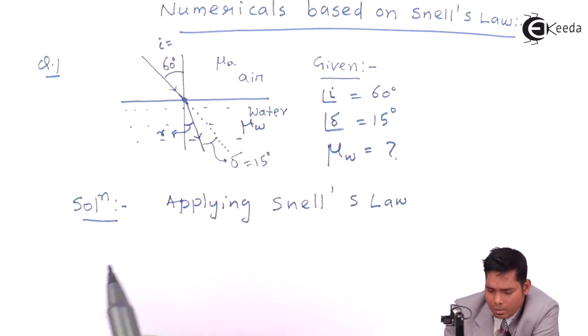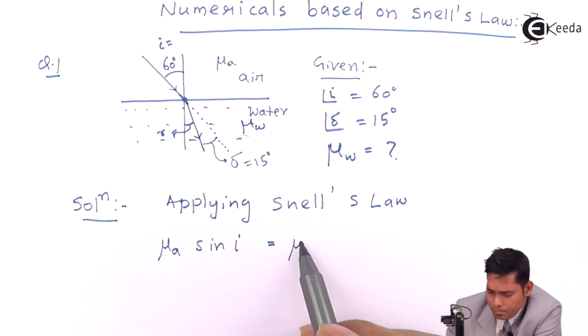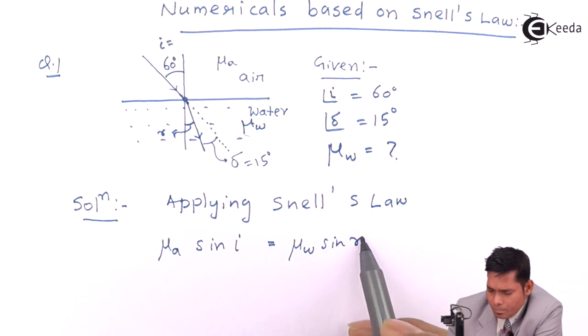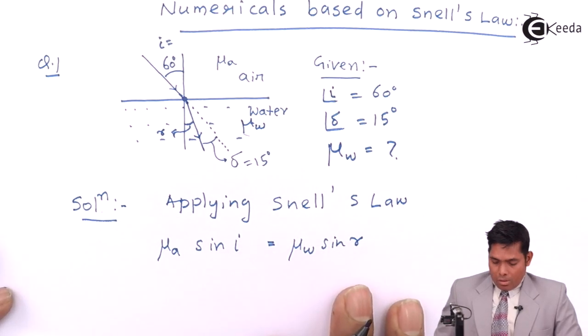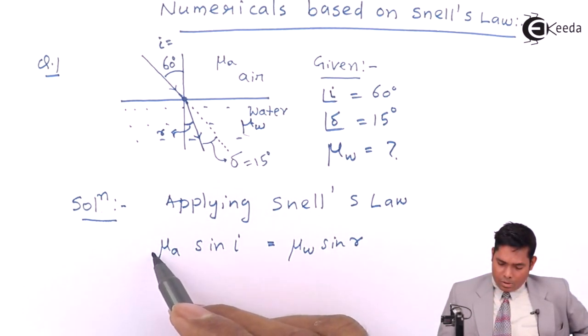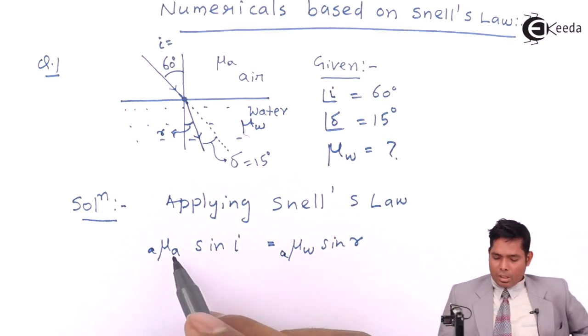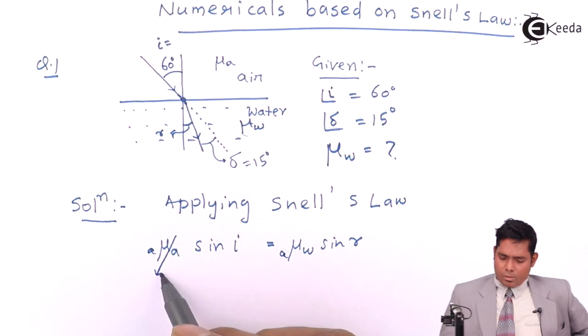Now, mu A sine of this angle I equals to mu W sine of R. This is always true, this is Snell's Law. Now, this value is 1 because this is air. Absolute refractive index. The refractive index of a medium with respect to itself is always 1.